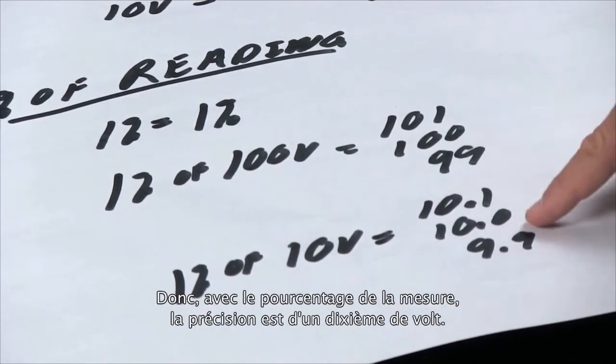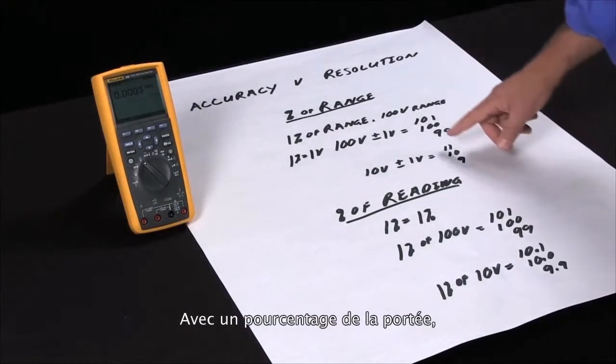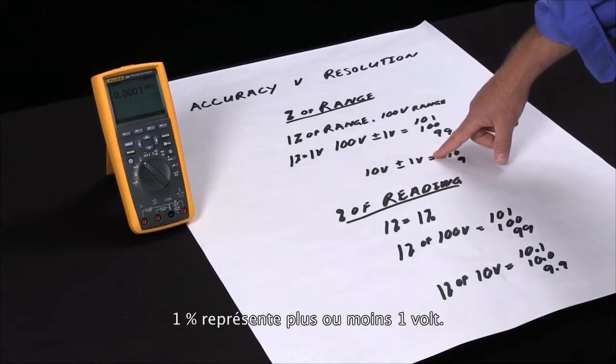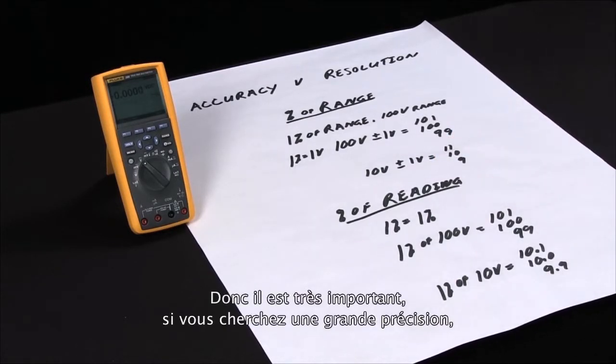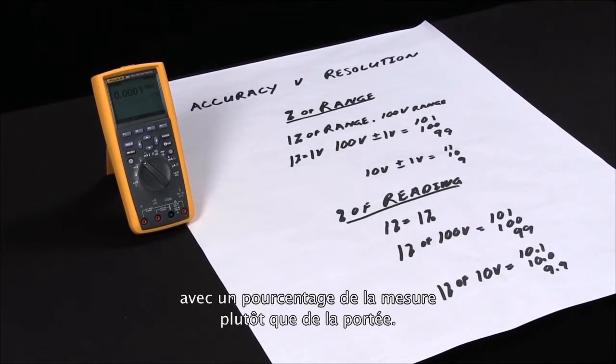So here with percent of reading, the accuracy is a tenth of a volt. The same thing specified with percent of range, one percent is now plus or minus one volt. So it's very important if you're looking for accurate readings to make sure you select a device with a percent of reading versus a percent of range.